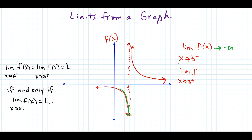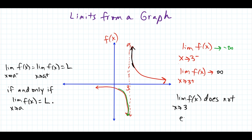If I wanted to investigate the limit as x approaches 3 from the right side of f of x, now we're following this portion of the graph, and you can see this side is heading up towards positive infinity. So using this idea, the limit as x approaches 3 in general of f of x does not exist because the graph is heading to two different places — on one side going down to negative infinity, on the right side heading up towards positive infinity.